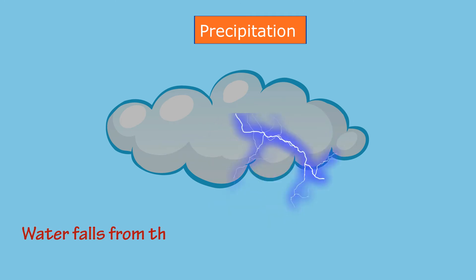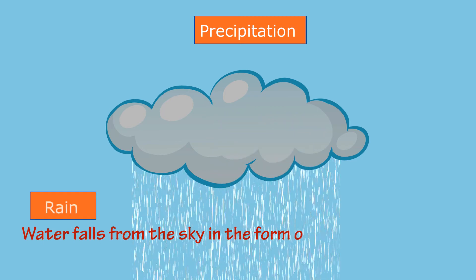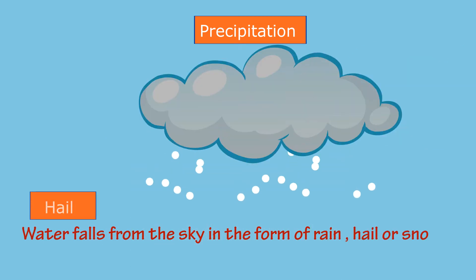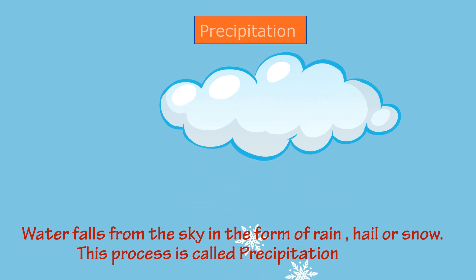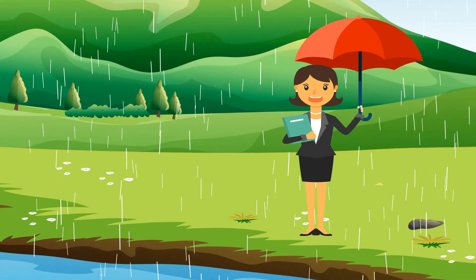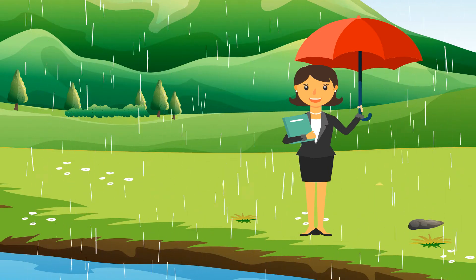When the clouds start getting heavy and cannot hold the water droplets anymore, they fall back to Earth in the form of rain, hail, or snow. This process is called precipitation.